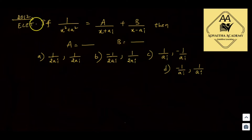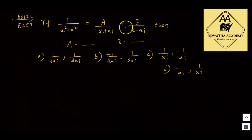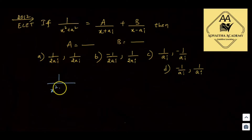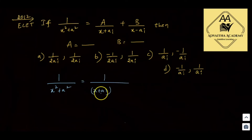Let's look at the first question — this is a 2012 e-set question. The question is: if 1/(x² + a²) equals A/(x + ai) plus B/(x - ai), then what are the values of coefficients A and B? So we write 1/(x² + a²) as 1/[(x + ai)(x - ai)].